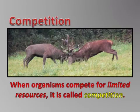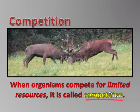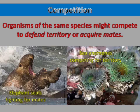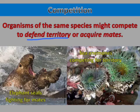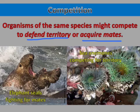When organisms compete for limited resources, it is called competition. Competition can happen between organisms of the same species. Organisms of the same species might compete to defend territory or acquire mates. These elephant seals are fighting for mates, and these sea anemones are competing with each other for territory.